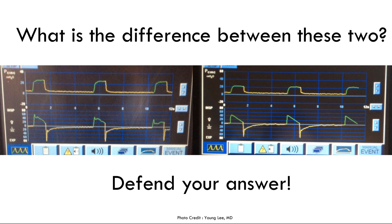Now here are two waveforms — pressure and flow. What is the difference between these two? Pause the video. To identify the target variable on the left, look at the flow waveform: it looks like a dependent variable — not smooth, not something that's been preset. So the target variable is pressure, confirmed because each pressure waveform looks exactly the same. Where pressure is the target variable, this is a pressure control mode.